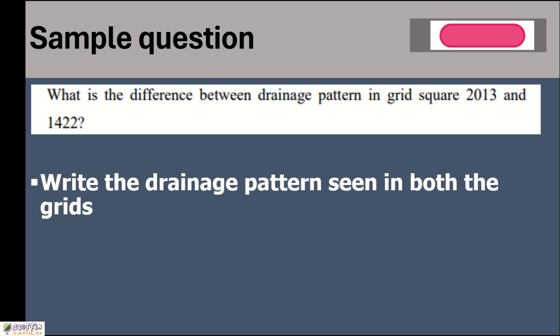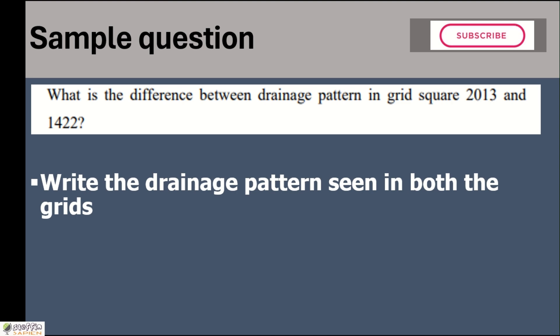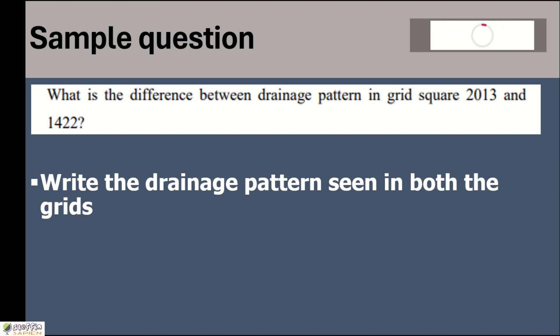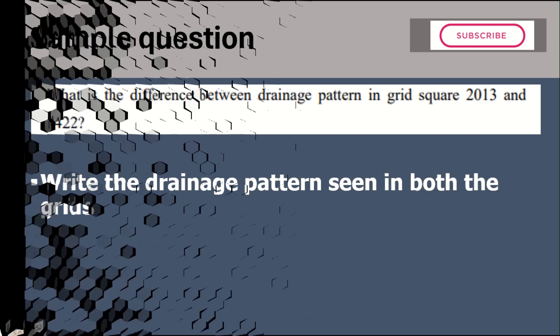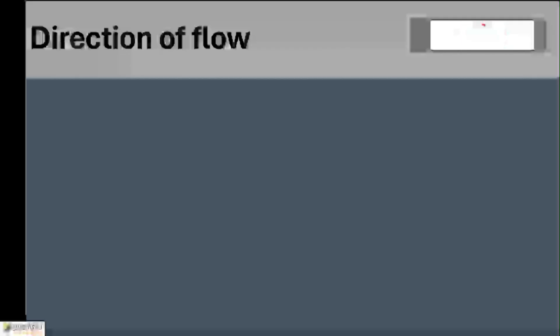Write the drainage pattern seen in both the grid squares — that is what the question asks. These are the differences. Suppose it is dendritic in one and inland in another, then you write: dendritic pattern in grid square 2013 and inland drainage pattern in 1422. Now let's move to the second part of the syllabus.